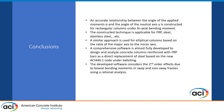In conclusion, an accurate relationship between the angle of the applied moment alpha and the neutral axis angle gamma is constructed for rectangular columns. For circular columns it is straightforward — any biaxial bending translates into uniaxial bending. The technique is applicable for FRP, steel, stainless steel, or any type of reinforcement, and a similar approach will be used for elliptical columns as the next step. A comprehensive software is almost fully developed to design and analyze concrete columns reinforced with FRP bars as a direct replacement of steel based on the new code under balloting, so by the time the code is out, we are ready to analyze.